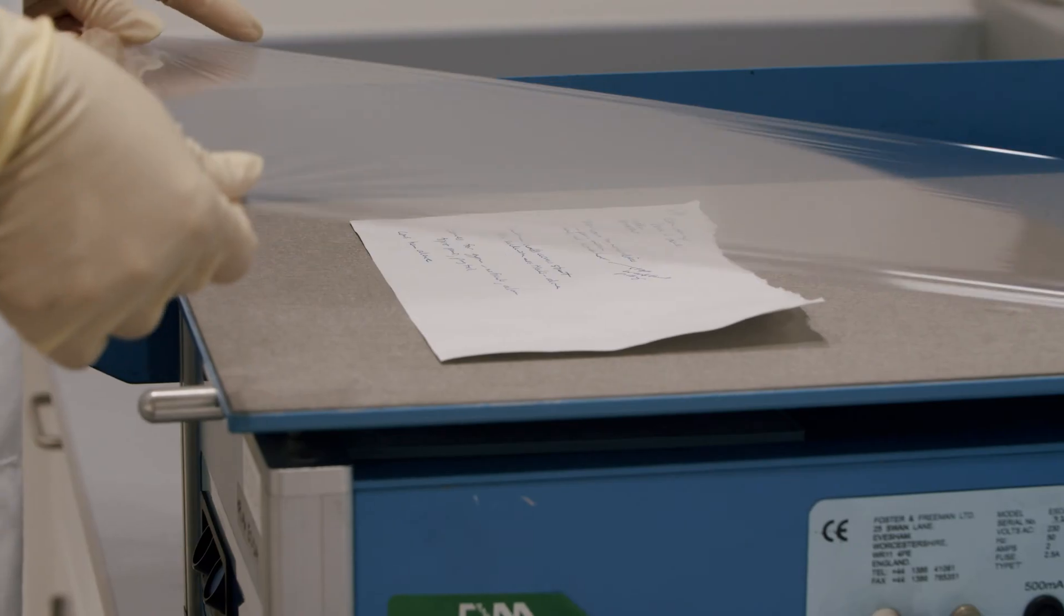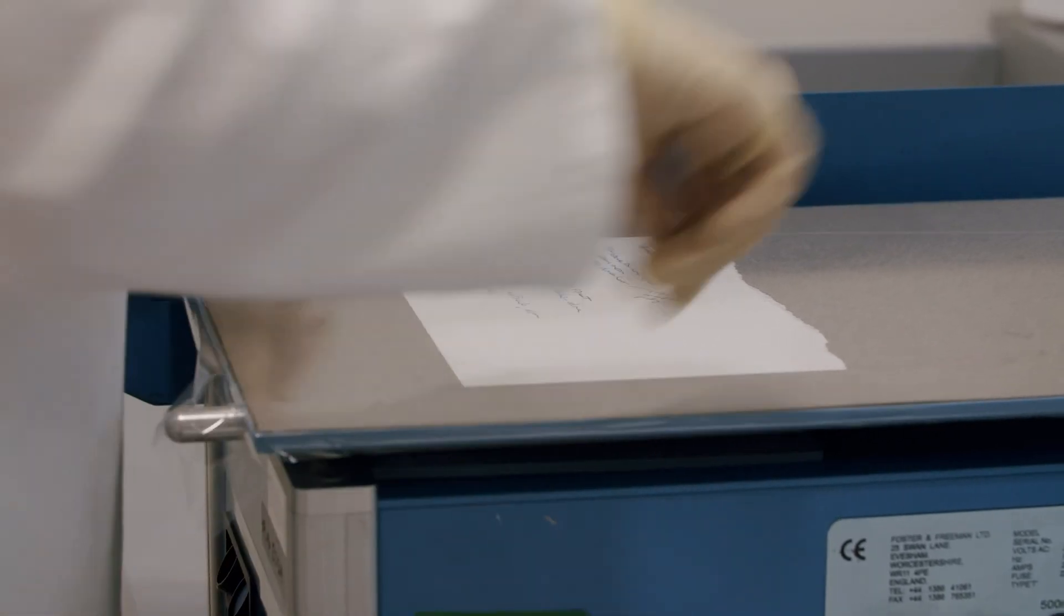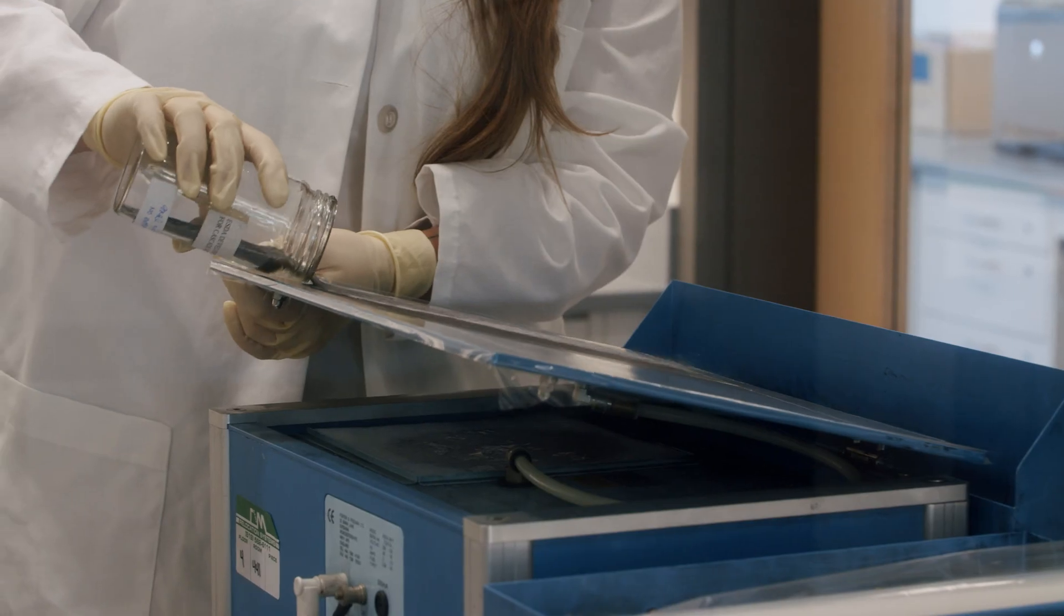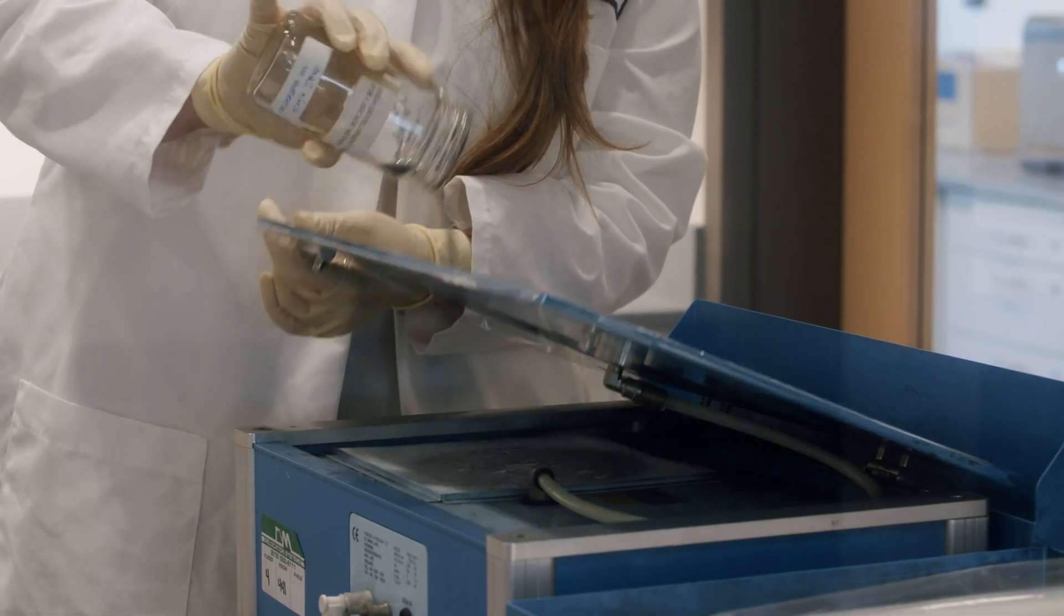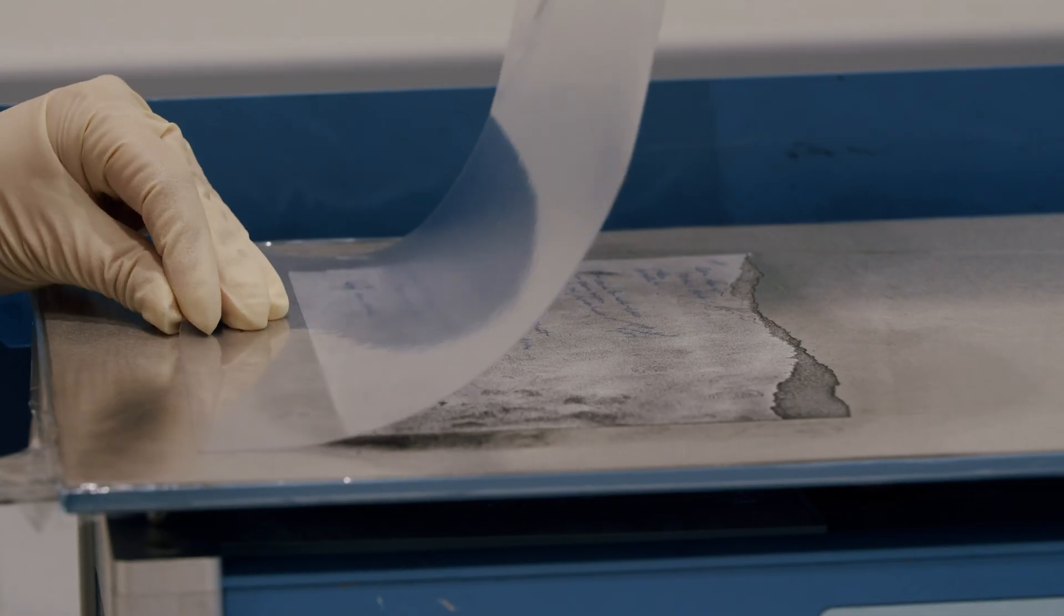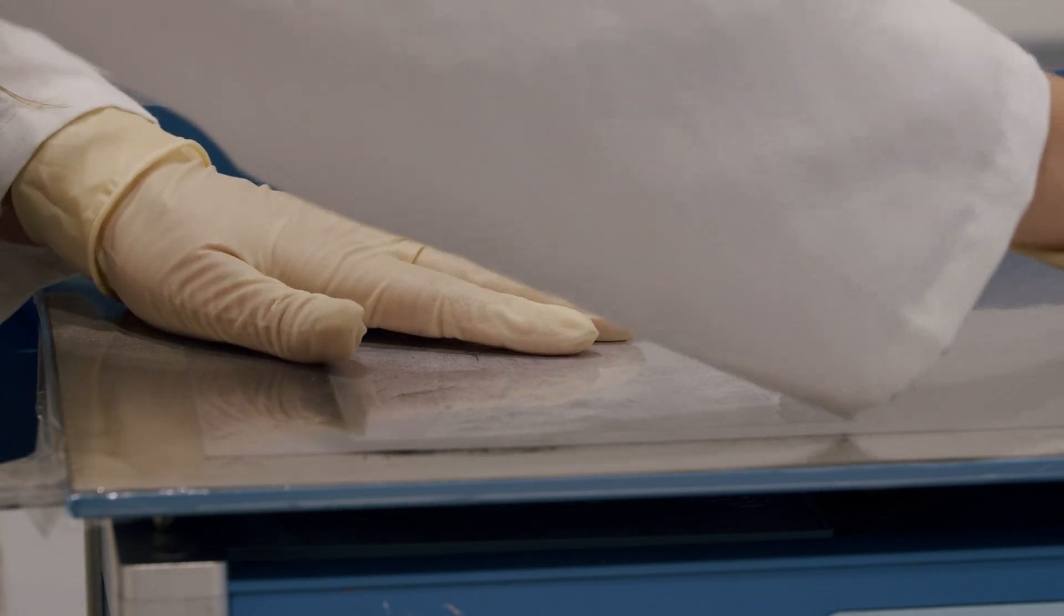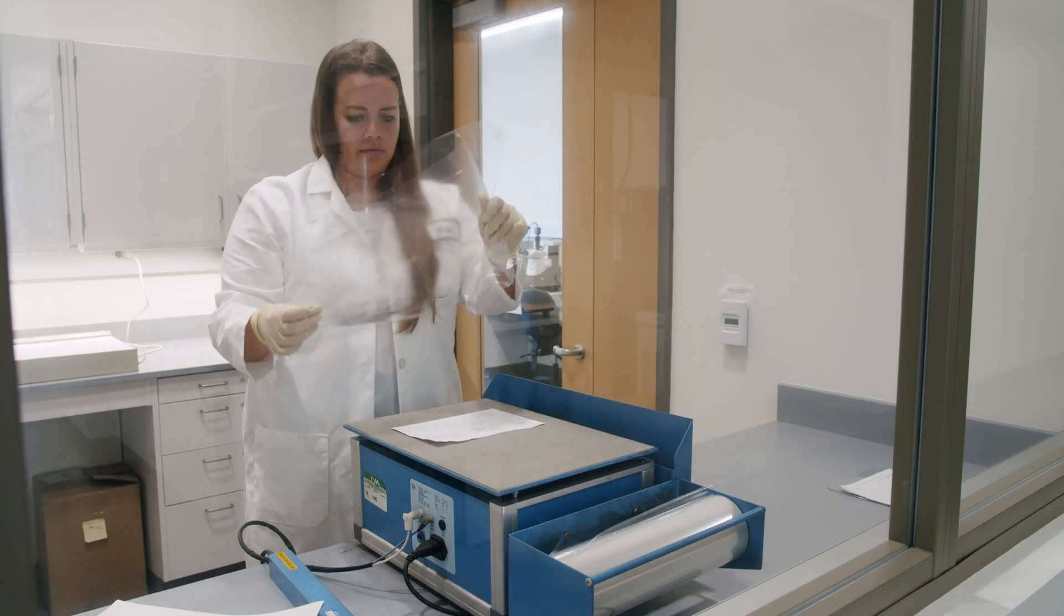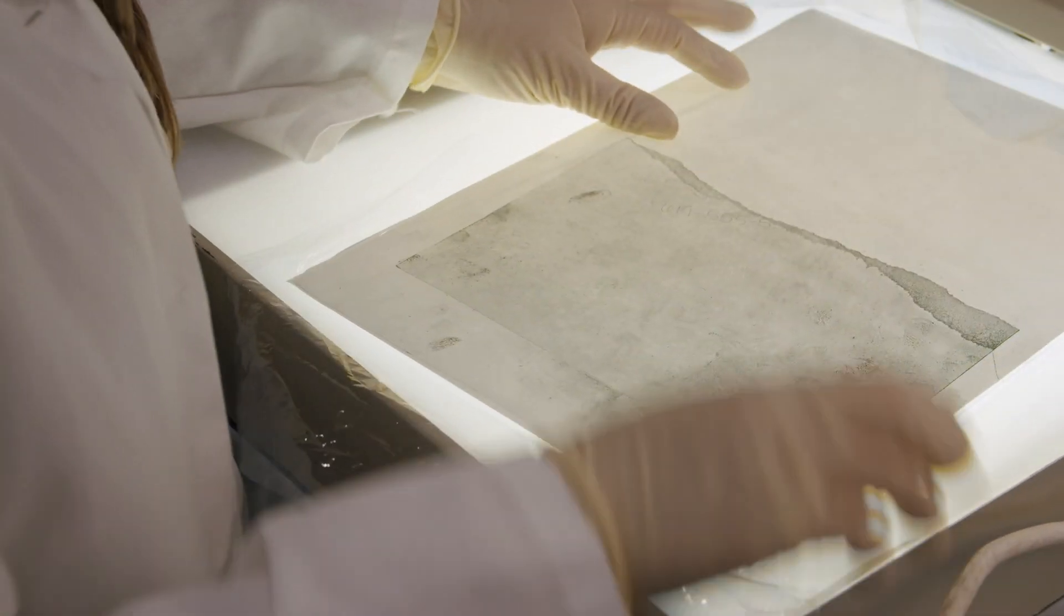We can look for indented impressions using the electrostatic detection apparatus. It's a humidity-controlled room because humidity activates damaged fibers on a piece of paper. So when you're writing in a notebook or writing on a stack of pages, if you're using a lot of pressure, you're leaving indented impressions on the pages underneath. And this instrument allows us to develop those indented impressions and make them readable.